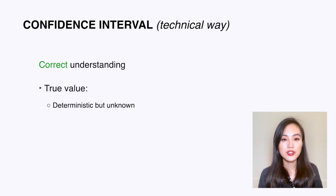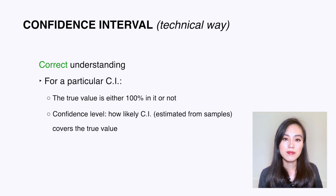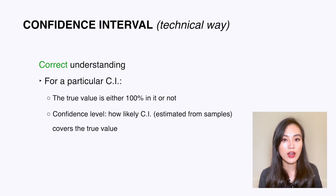The true value is determined by nature but unknown to us — it will not change at all. What can change are the boundaries of the confidence interval, which are estimated from samples, and the confidence level we set. For a specific confidence interval, the true value is either 100% within it or not. The 95% refers to: after computing 95% confidence intervals from many samples, how likely they would cover the true value.